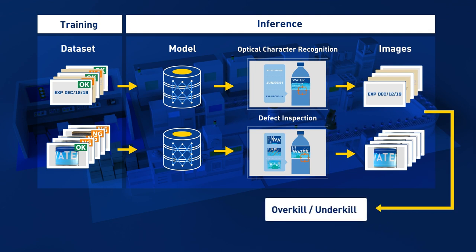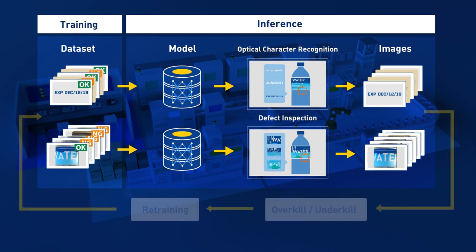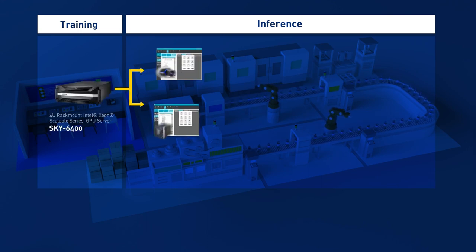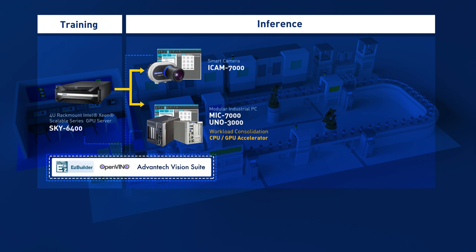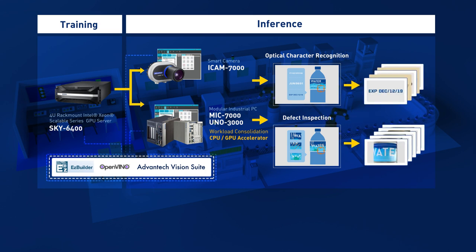After the deployment of the training model, the inference engine is able to operate effectively with similar images. The retraining process collects new images and generates new training models in addition to the original data sets. Advantech's deep learning machine vision solutions include industrial server training, the edge inference engine with powerful and scalable accelerators, and the OpenVINO SDK to simplify the development and deployment of deep learning models.